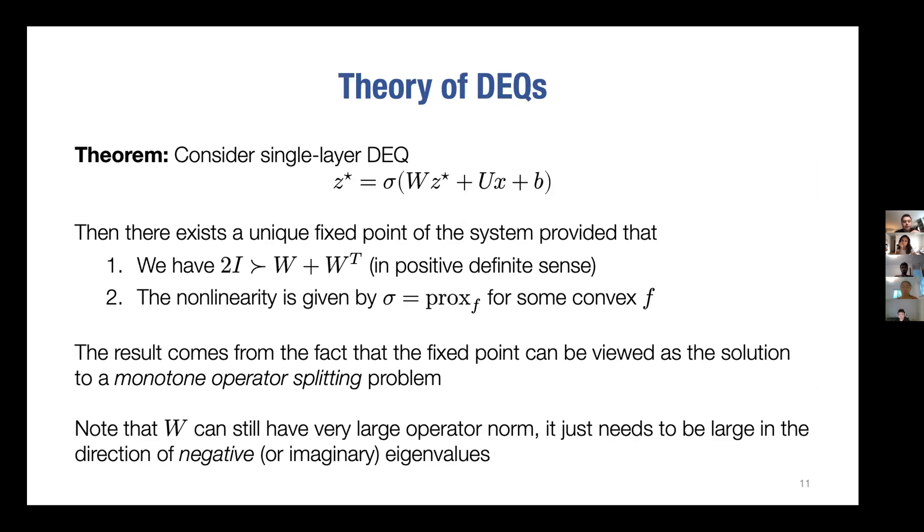The last thing I want to highlight is something about the theory of these things. An obvious question is, you're talking about an equilibrium point, but how do I know it's going to exist, how do I know it's going to be unique? For a long time we didn't really know this - we sort of defined this heuristically. But in some other work that we're doing, we're actually getting a really good handle on the theory of these operators as well. There actually are some conditions, like a positive definite condition and a condition on the monotonicity of the non-linearity, that actually guarantee both uniqueness and existence of the fixed point.